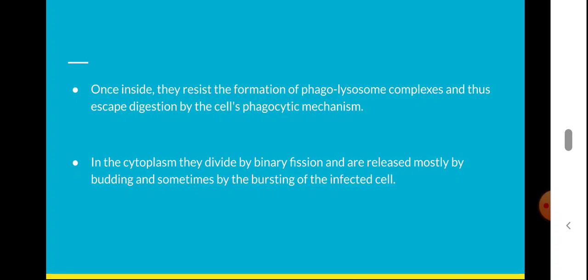The bacteria remain safely inside the phagosome — the phagolysosome does not form — and begin reproduction. They divide by binary fission inside the cytoplasm. The large number of bacteria formed are then released outside the host cell by budding, and sometimes by bursting of the infected cell when the number becomes very large.